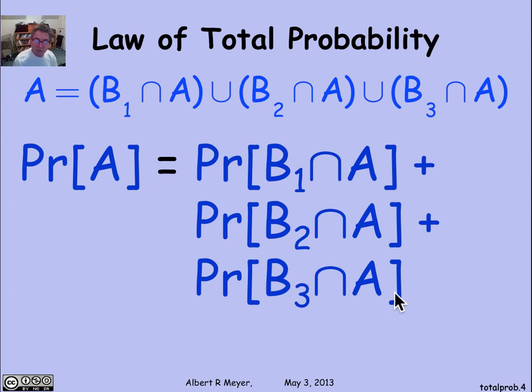Now, the most useful form of the law of total probability is when you replace this intersection, B1 intersection A, by the conditional probability using the product rule.